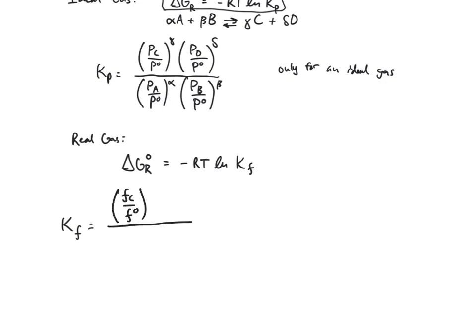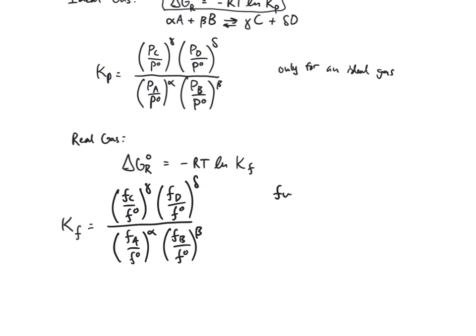We have F_C and we'll come back to what all these terms mean. Note that this applies to the exact same reaction as before. This is our fugacity equilibrium constant. So what is fugacity? Fugacity F is sort of like a pressure — it's going to be in units of pressure, so it may be in bars, atmospheres, or pascals.